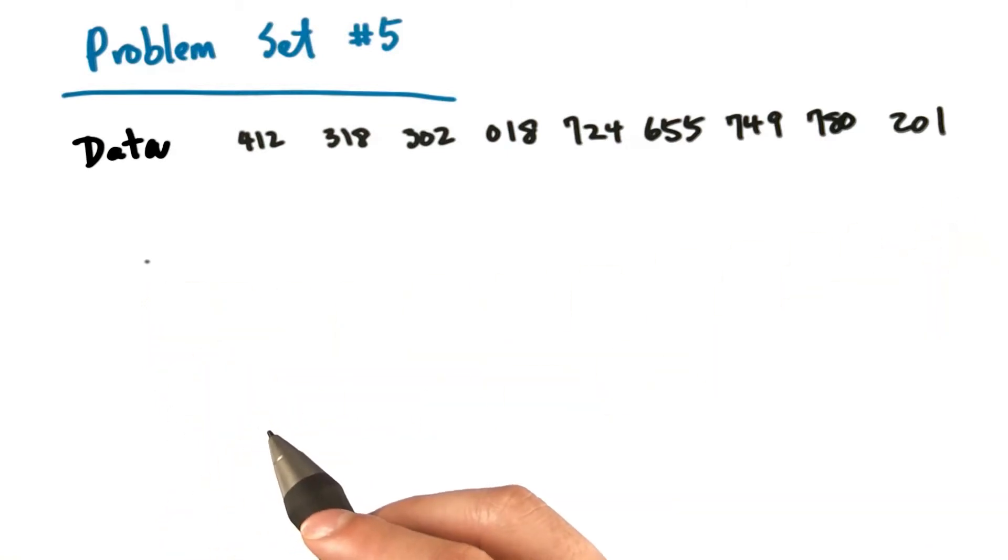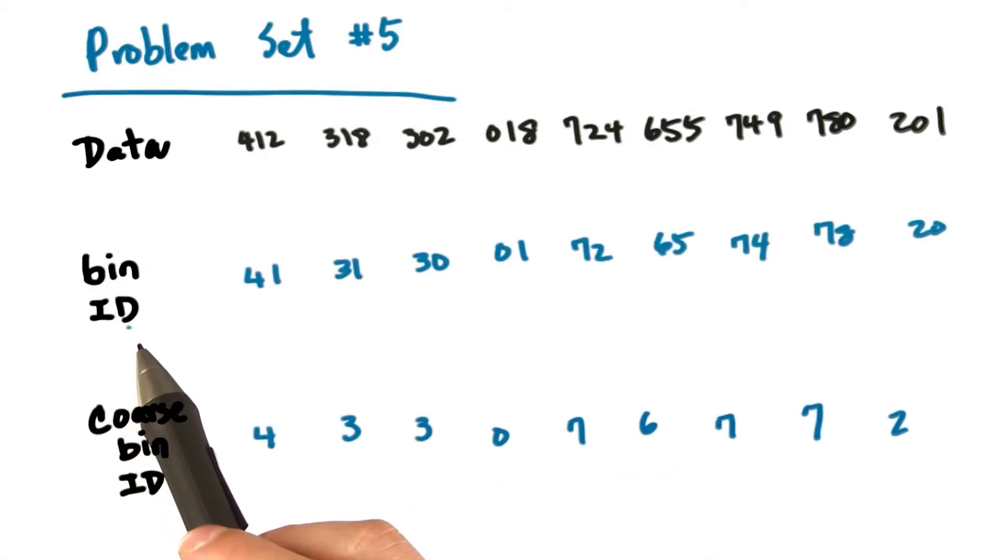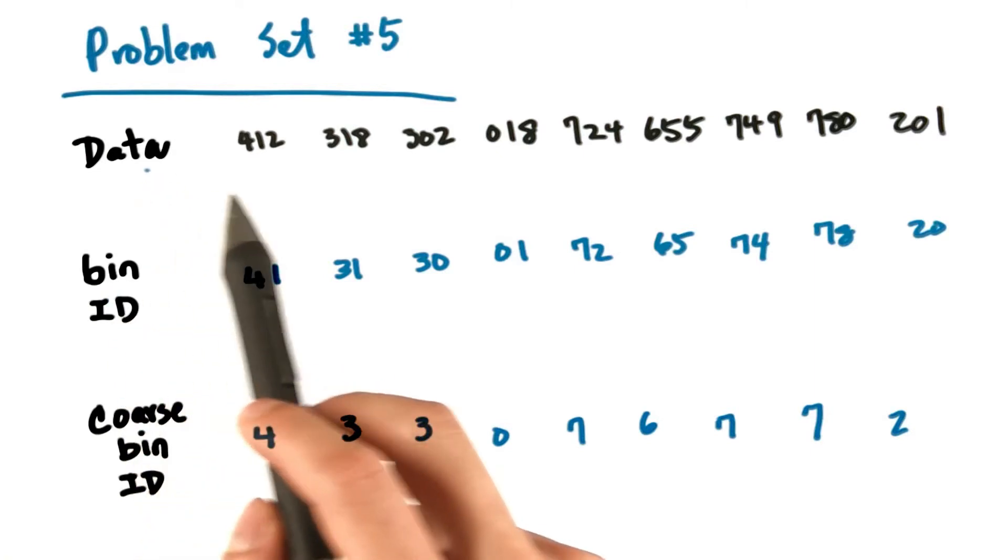Now let's compute the bin ID for each input element as well as the coarse bin ID for each input element. Let's suppose we have 10 equally sized coarse bins. This is the result of calculating the bin ID as well as the coarse bin ID for each of the input elements.